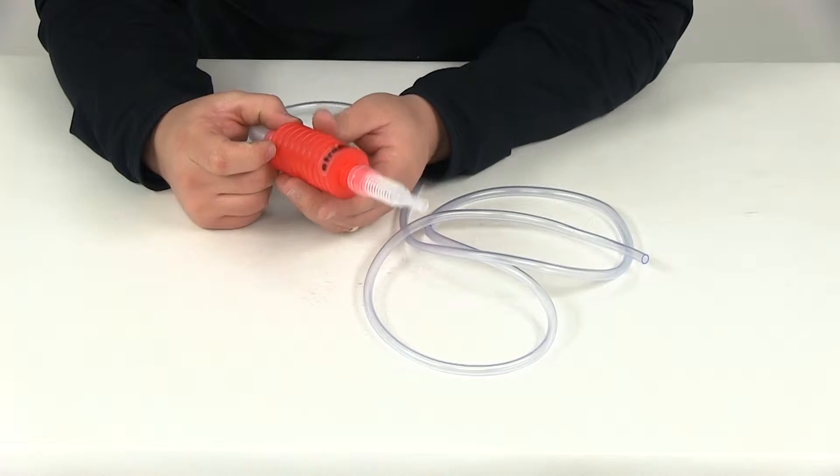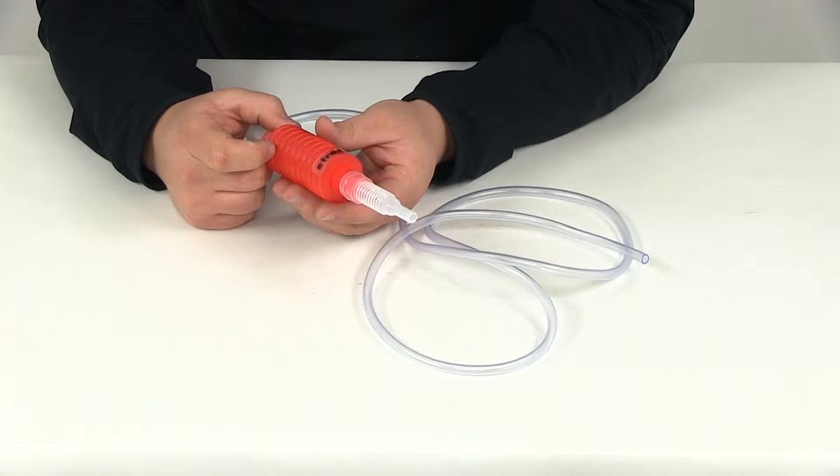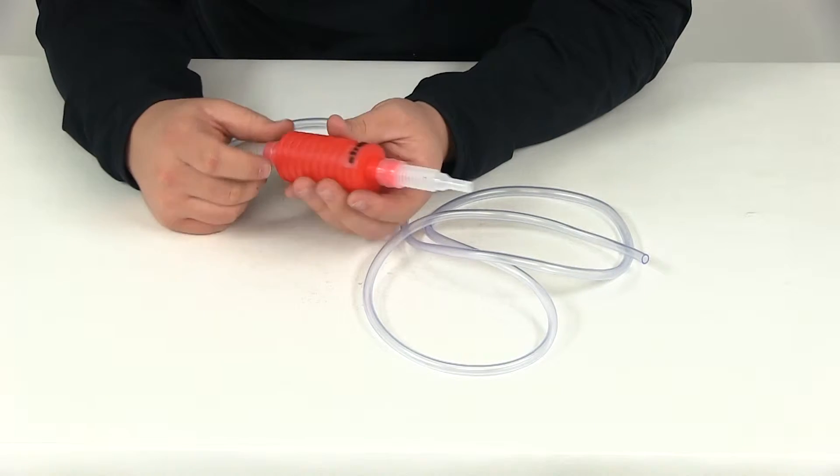Today we're going to be taking a look at part number FT10802. This is the Flow Tool siphon with a six foot long hose.